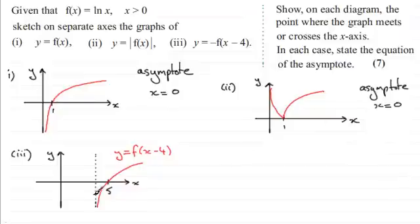The asymptote here will be at x equals four but now we've got a minus in the front putting a minus in the front of any function what that does is it reflects it in the x axis.